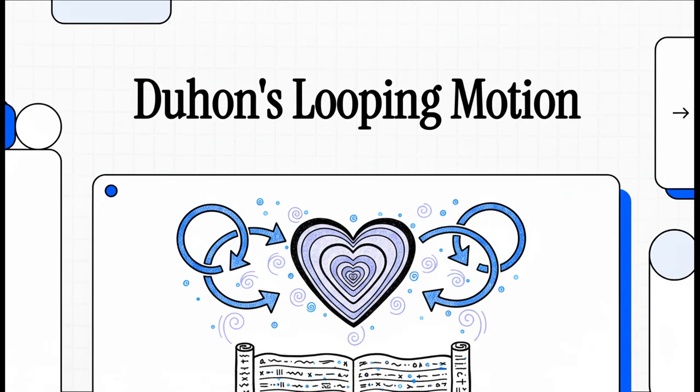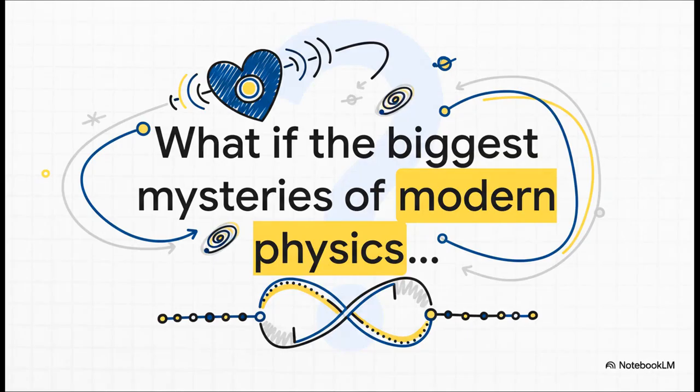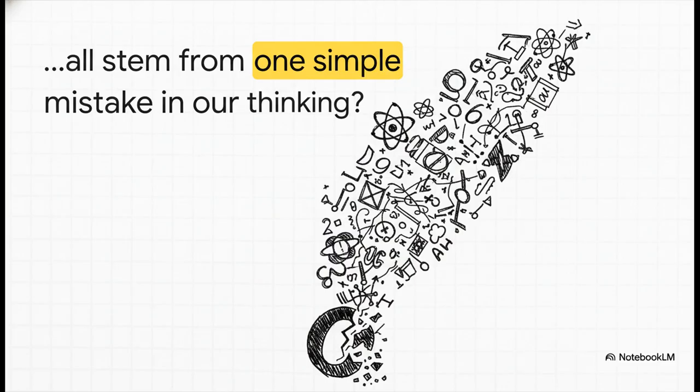All right, let's dive into something pretty wild. A brand new way of thinking about the very fabric of reality itself. You know all those huge, nagging questions that keep physicists up at night? Things like, where did the universe even come from? What's really going on inside a black hole? And all that undeniable weirdness in the quantum world? What if all of them, every single one, boil down to one simple fundamental mistake? A mistake that's baked right into the very math we use to describe everything.